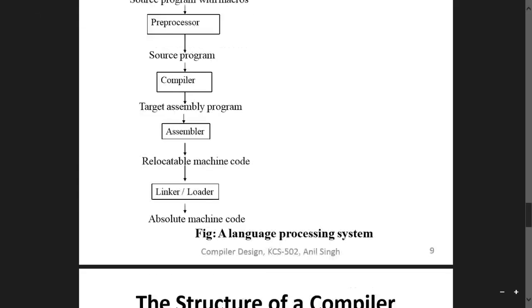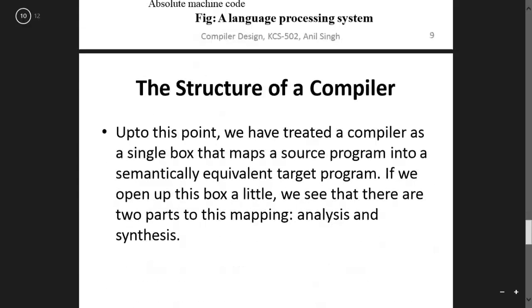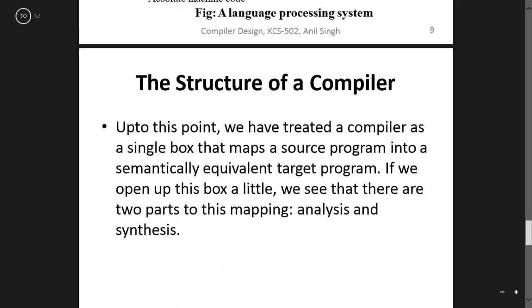Now, structure of compiler. What is the structure of the compiler? Up to this point we have treated a compiler as a single box that maps a source program into a semantically equivalent target program. But if we open the box a little, we can see there are two parts of the mapping: analysis and synthesis.